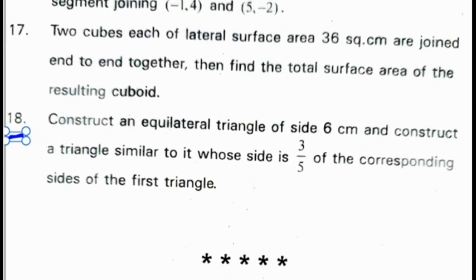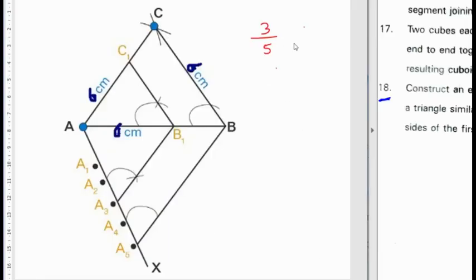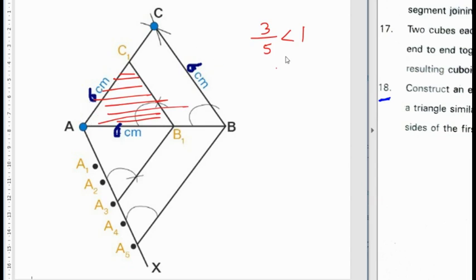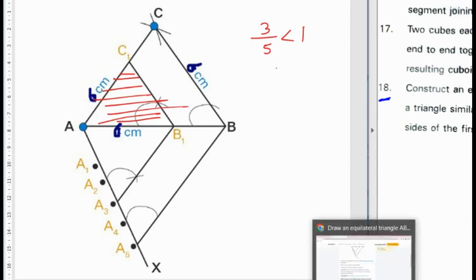The last problem in this question paper is a construction. Construct an equilateral triangle of side 6 cm and construct a similar triangle whose sides are 3 by 5 of the corresponding sides of the first triangle. Since 3 by 5 is less than 1, the required triangle comes inside the given triangle. The constructed triangle is AB'C', which is similar to triangle ABC. Thank you for watching, students.